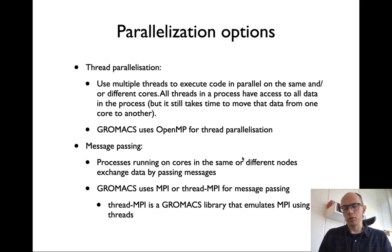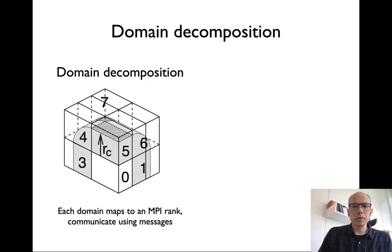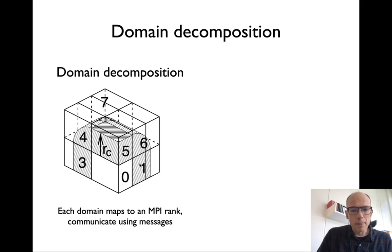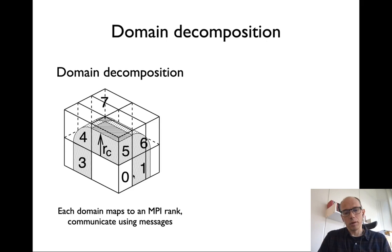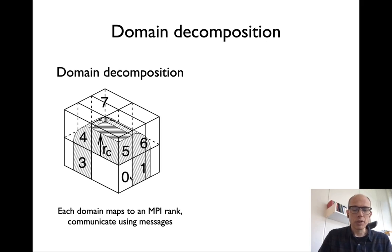Thread MPI allows much easier interaction and automation for parallelization when running on a single node. At the highest algorithmic level, GROMACS uses 3D domain decomposition — the simulation box is divided into domains (for example, 3×2×2 = 12 domains). Local atoms reside in each domain, and before computing non-local forces, the 'halo' of neighboring atom positions must be communicated from other processors, and then forces communicated back after computation.